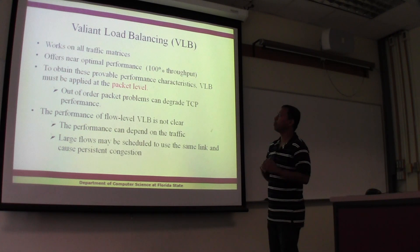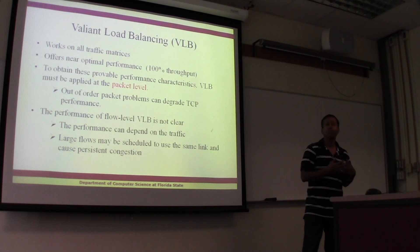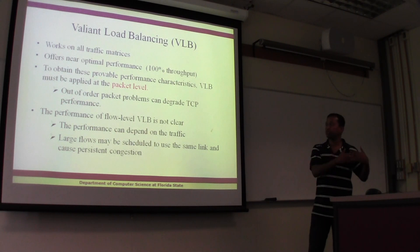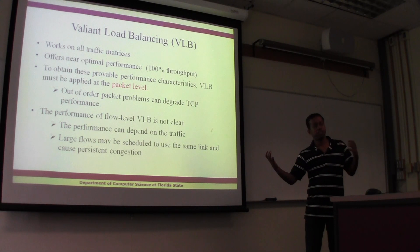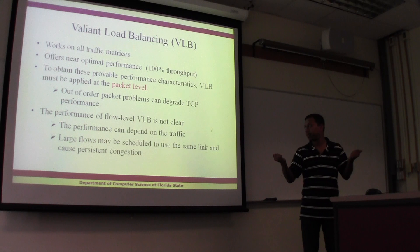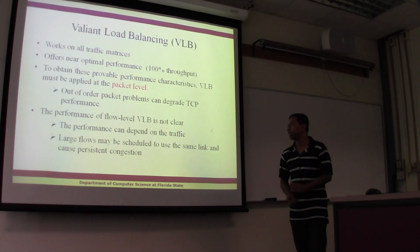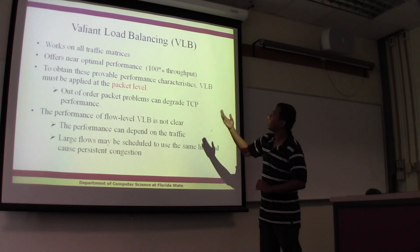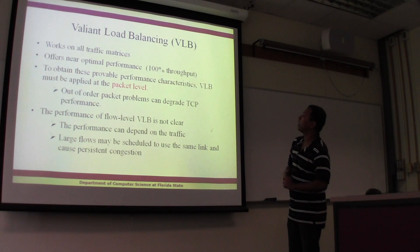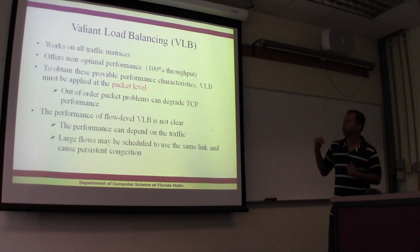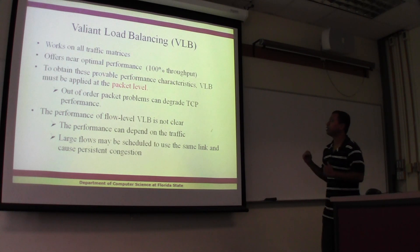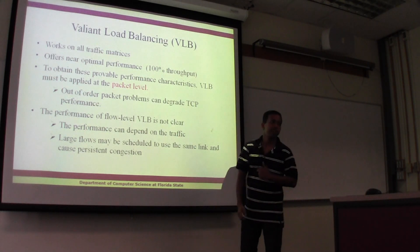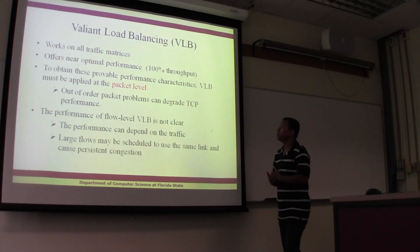That provides the load balancing in the existing scheme, and at present it is done at the flow level. By a flow, what we mean is a message from a source node and source port to a destination node with a destination port — it's an association between the source and the destination. To obtain optimal performance, the VLB must be applied at the packet level, but as of now it's applied at the flow level.